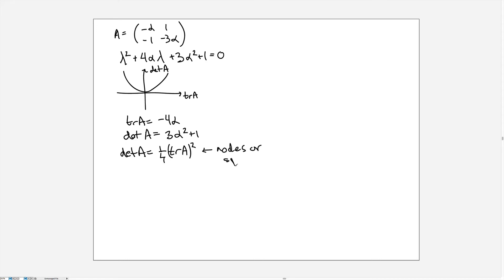Because this curve tells us whether we have nodes or spirals. If we're above this curve we have spirals. If we're below it we have nodes, unless we're below the trace axis, in which case we have saddles.